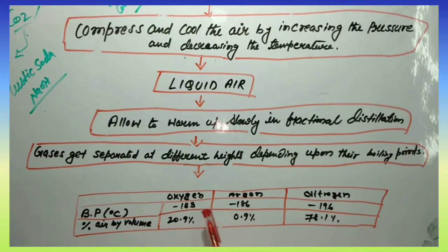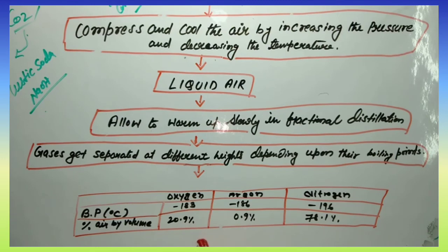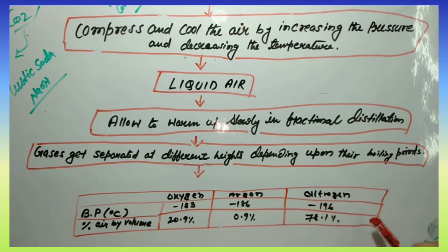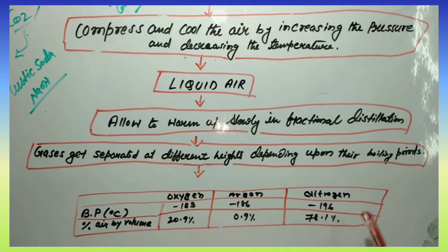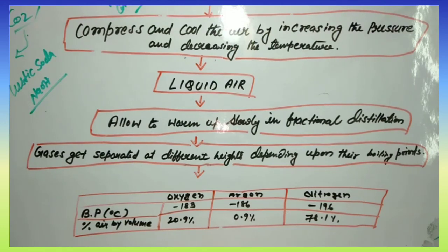Oxygen has the highest boiling point at minus 183 degrees, and nitrogen has the least boiling point at minus 196 degrees. The percentage of oxygen in air is 20.9%, argon is 0.9%, and nitrogen is the most abundant at 78.1%. Nitrogen has the least boiling point.